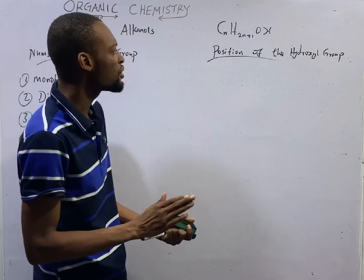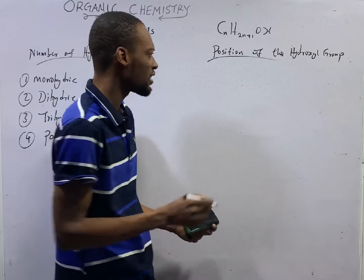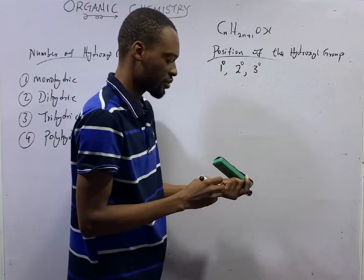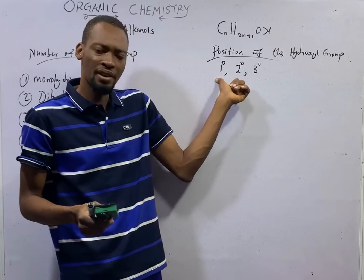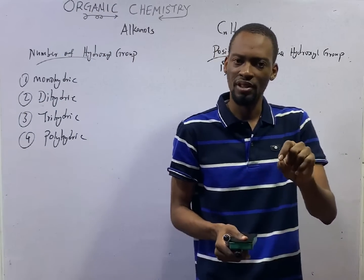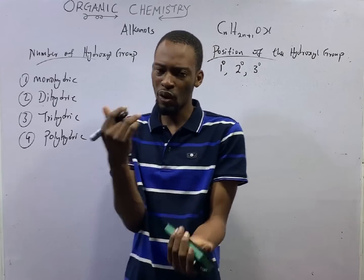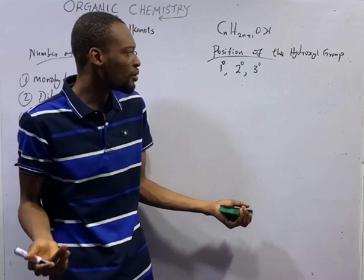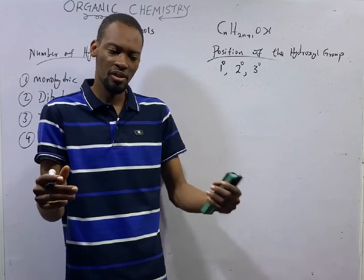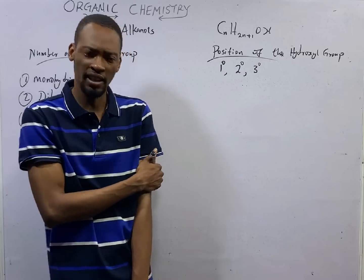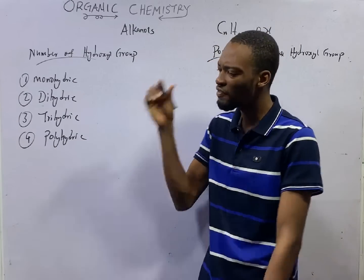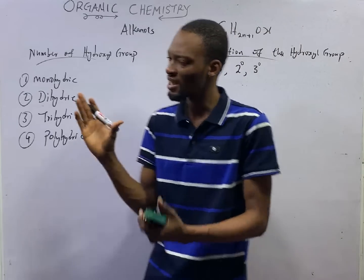Now, depending on the position of the hydroxy group, alcohols are classified into primary alcohols, secondary alcohols, and tertiary alcohols. When the OH group is attached to a primary carbon, that is a primary alcohol. Remember, we discussed the classification of carbon — primary carbon is a carbon that has one other carbon directly linked to it, secondary carbon has two, while tertiary carbon has three other carbon atoms directly linked to it. This is a series, so you must start from episode one because everything links.